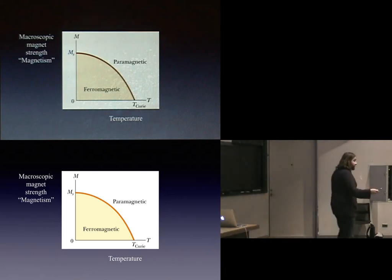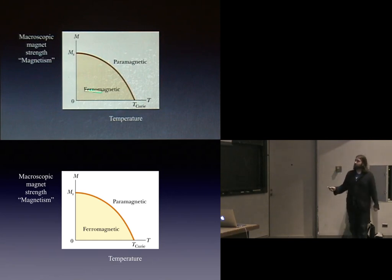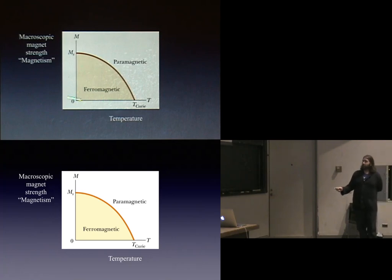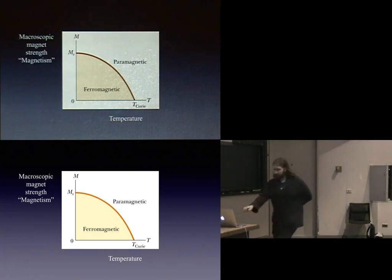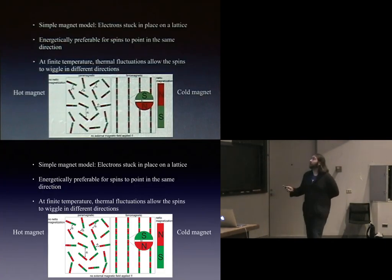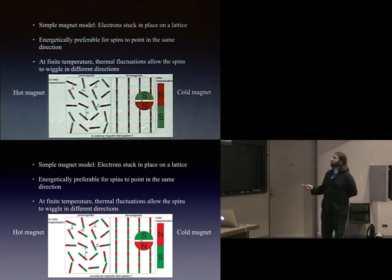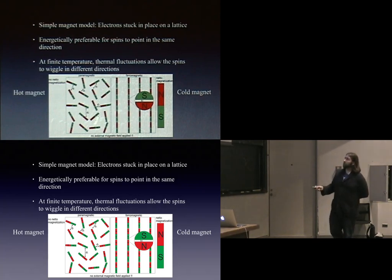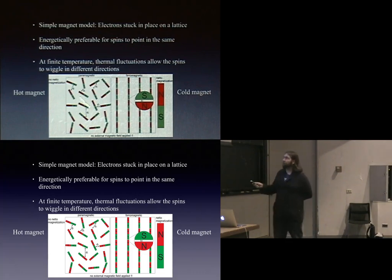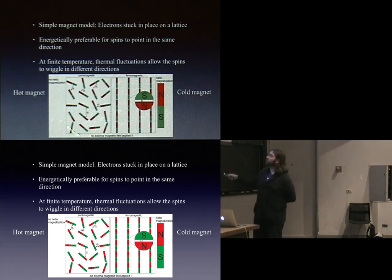The temperature axis shows: at very low temperatures, a ferromagnet has all spins oriented in the same direction. As the temperature increases, eventually the magnets disorder. The ordered phase is called a ferromagnet; the disordered phase is called a paramagnet — all built out of tiny magnets, but with no large-scale magnetic order.